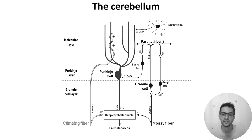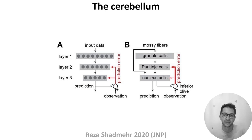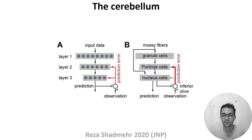So how can we think about or model this network's function? Models have been proposed for over 50 years, but one simplified way to think about it is as a three-layer network with two pathways. Inputs arrive via the mossy fibers, which connect to both the first and third layers with granule and nucleus cells. There are feed-forward connections through the network, and the third layer generates output predictions.